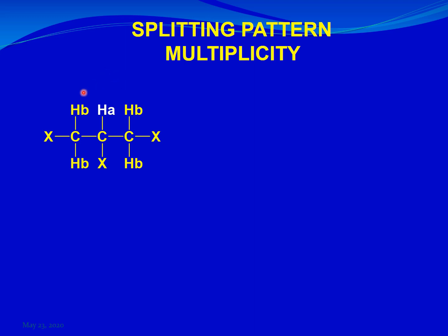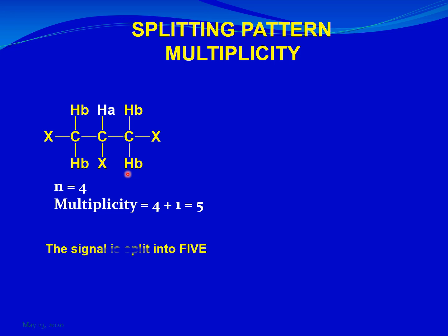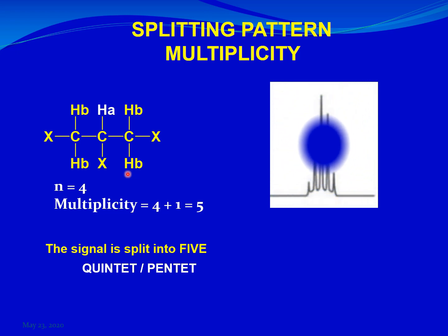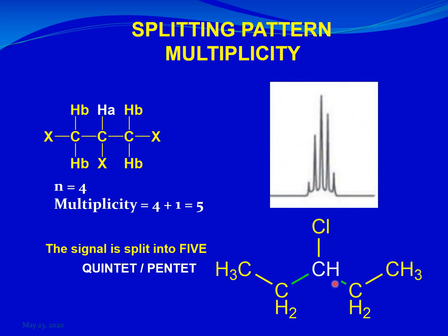Similarly, if HA has 4 magnetically inequivalent hydrogens nearby that are equivalent to each other — like 4 HB labels — then according to the n plus one rule, the signal is split into 5, called a quintet or pentet. You can have a molecule in which a CH labeled in white has 4 neighboring hydrogens, and its signal will be split into 5. If there are 5 hydrogens in the vicinity, the signal is split into 6, giving a sextet. If two CH3 groups are next to a CH, the signal of that CH is split into 7, giving a septet.